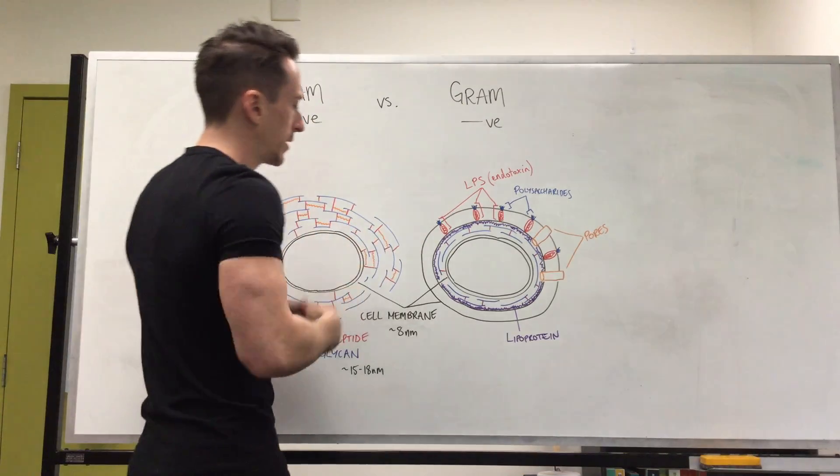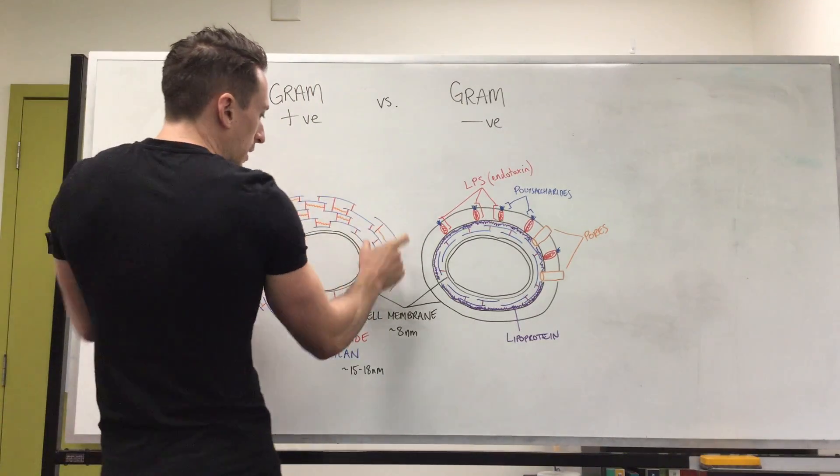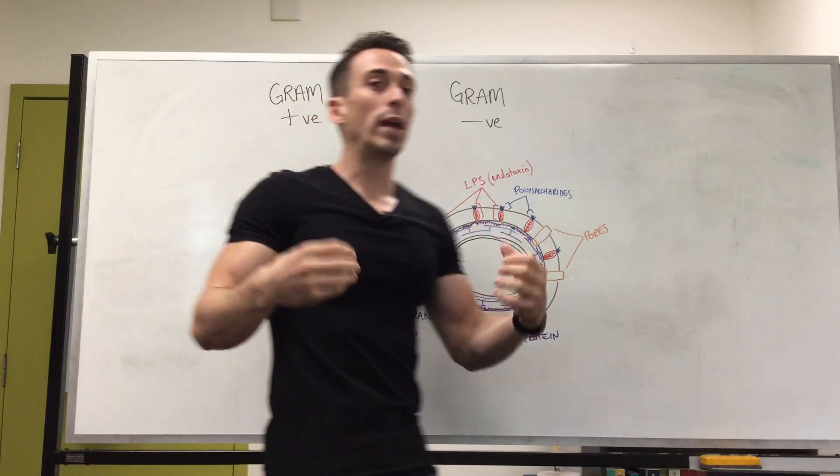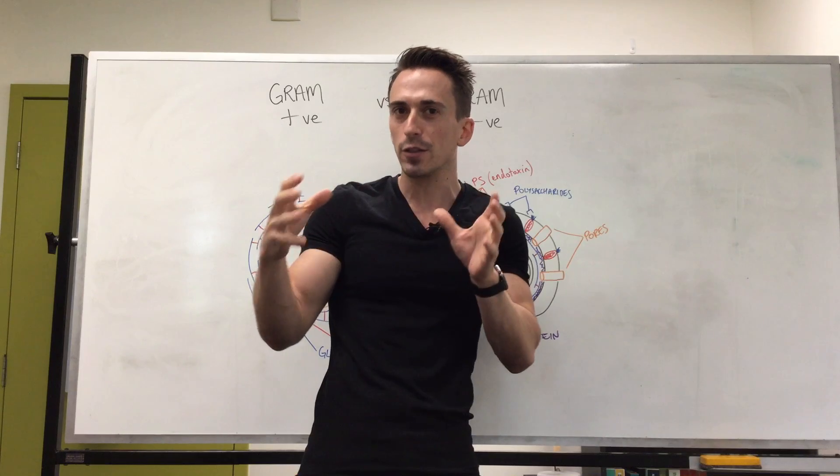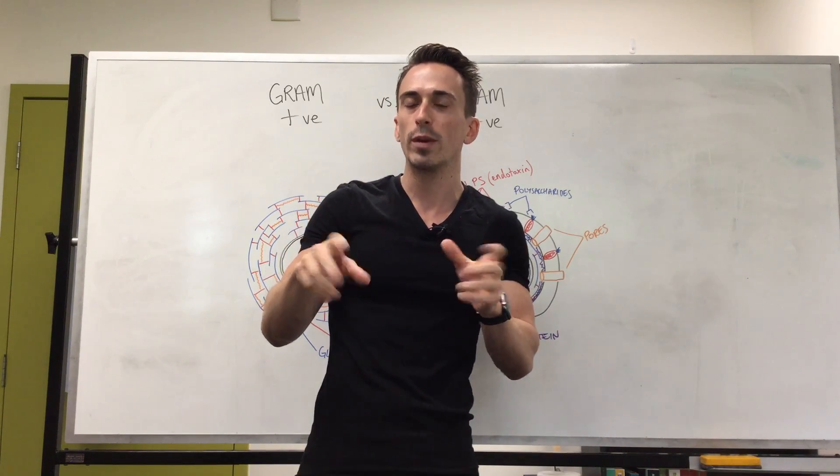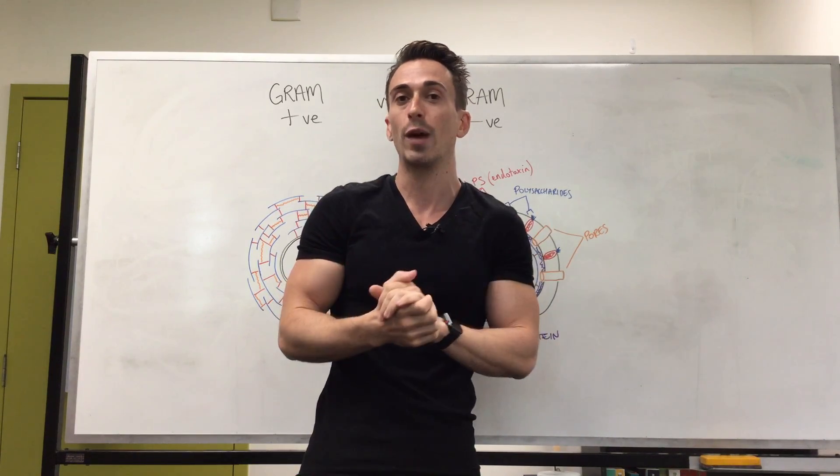Now we don't have a cell wall, bacteria do have a cell wall, which means we can exploit these differences to kill off bacteria when they're invading us, and we do this through antibiotics. For example, penicillins and cephalosporins, they actually attack this cell wall and bust it apart.